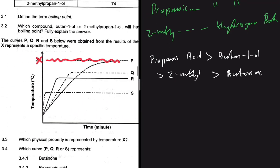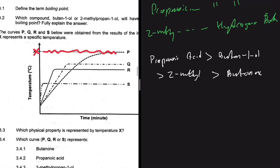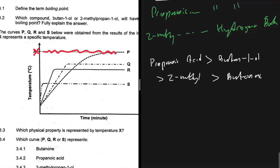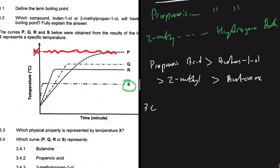For 3.4.1: which curve P, Q, R, or S represents butanone? It will be the one with the lowest boiling point, and that is S. For 3.4.2: propanoic acid should be the one with the highest boiling point, so that is P.